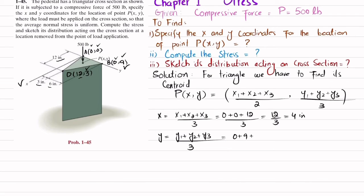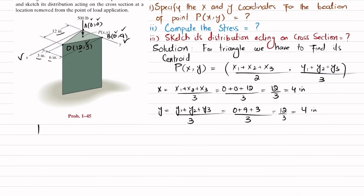So 0 plus 9 plus 3 divided by 3 equals 4. This is the final result: P(x,y) is (4, 4).